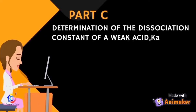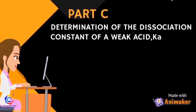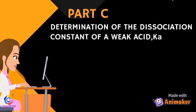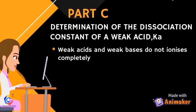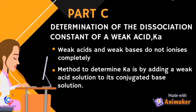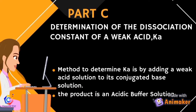For part C of this experiment, we will determine the dissociation constant of a weak acid. Weak acids and weak bases do not ionize completely. The method involves adding a weak acid solution to its conjugate base solution, producing an acidic buffer solution.